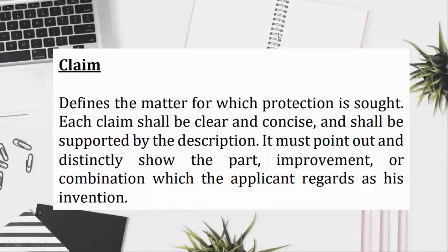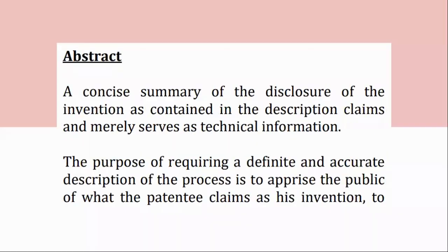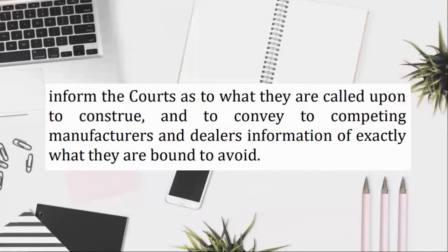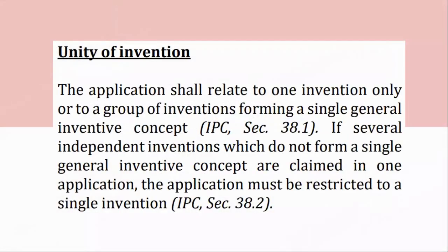The purpose of requiring a definite and accurate description of the process is to apprise the public of what the patentee claims as his invention, to inform the courts as to what they are called upon to construe, and to convey to competing manufacturers and dealers information of exactly what they are bound to avoid. Unity of invention: the application shall relate to one invention only or to a group of inventions forming a single general inventive concept, IPC, Section 38.1. If several independent inventions which do not form a single general inventive concept are claimed in one application, the application must be restricted to a single invention, IPC, Section 38.2.